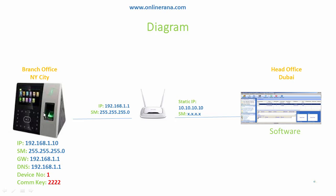Here is a ZKTECO machine — it's the IFA 702 model. I have a branch office in New York City and the head office is in Dubai. How can we connect a biometric machine in New York City in a cheap and economical way? The first scenario is: you have a public live IP, set it on that machine, give it the IP, subnet mask, and gateway provided, and access it through that public live IP in the software.